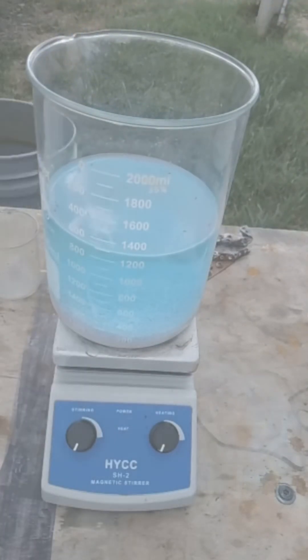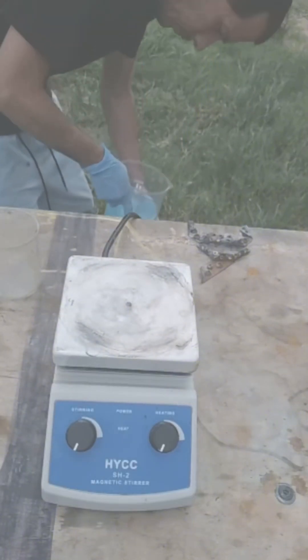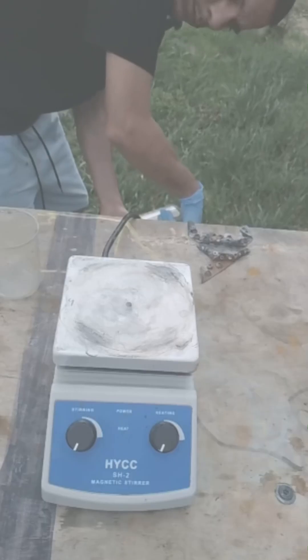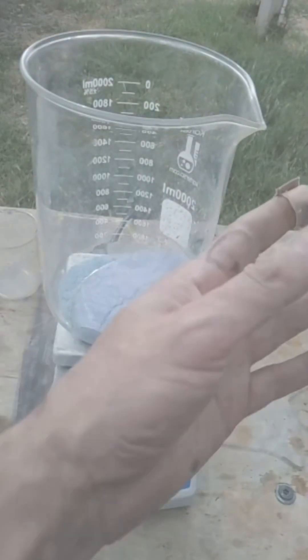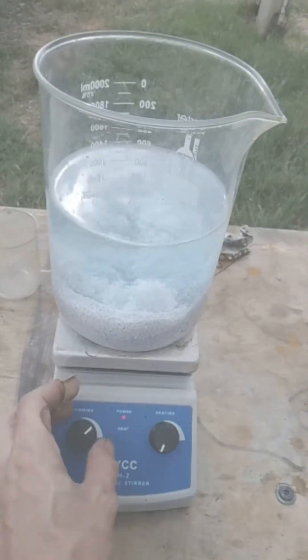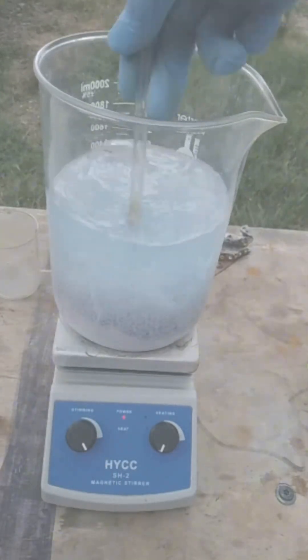So you just want to rinse and repeat, keep rinsing and repeating like you're going to see me do here, until when you put your water in there it is clear. That's going to tell you. Now, you can use pH balance sticks and all that, but you can just eyeball it. You can tell when it's gone, when it's clear it's gone. So like I said, just rinse and repeat until it is clear. So we'll move on to the next step.